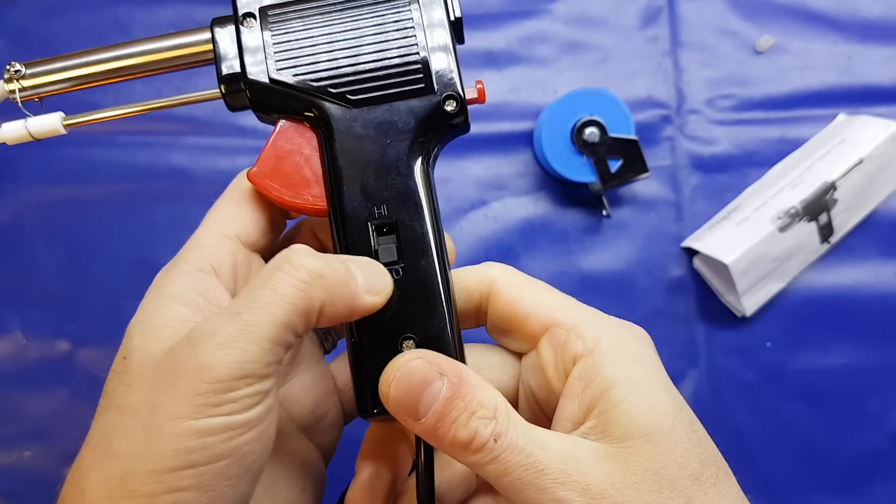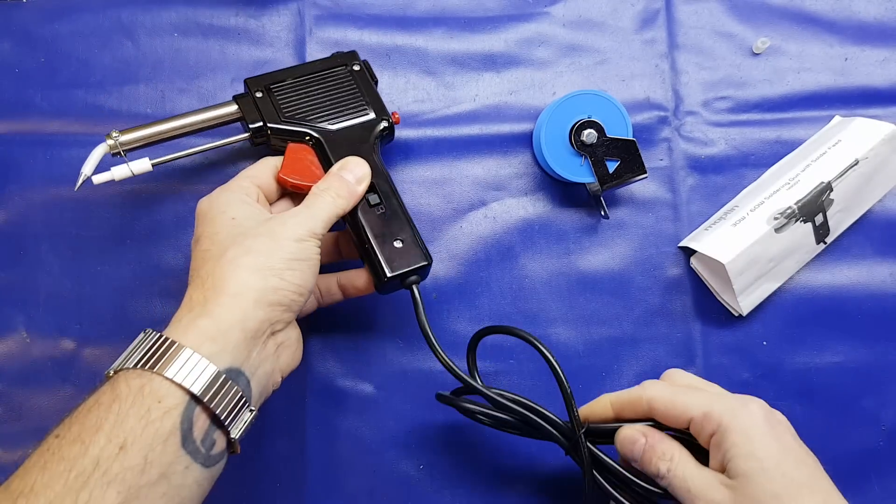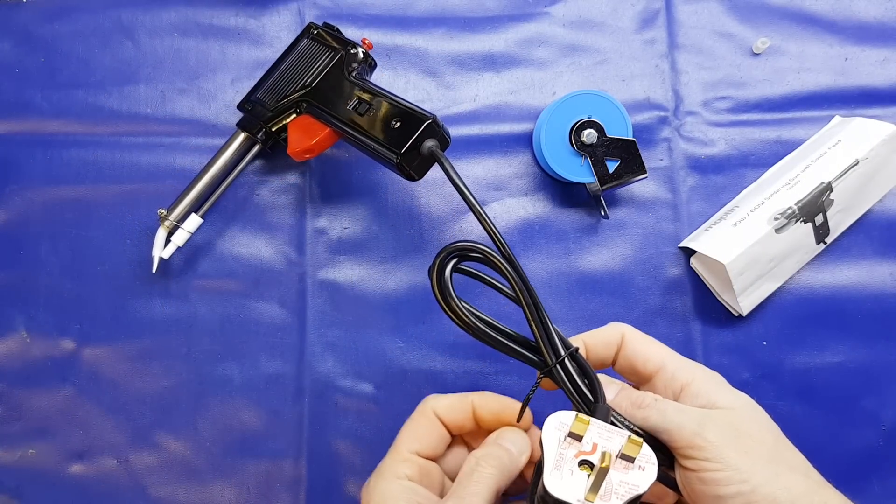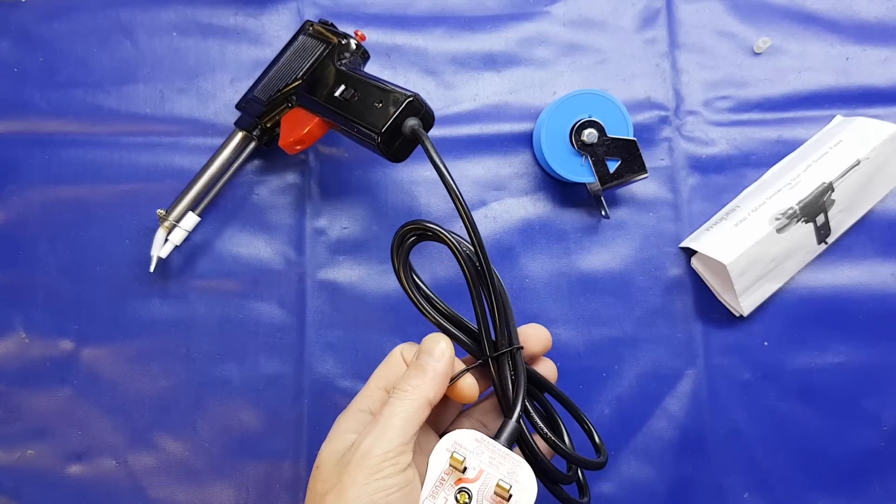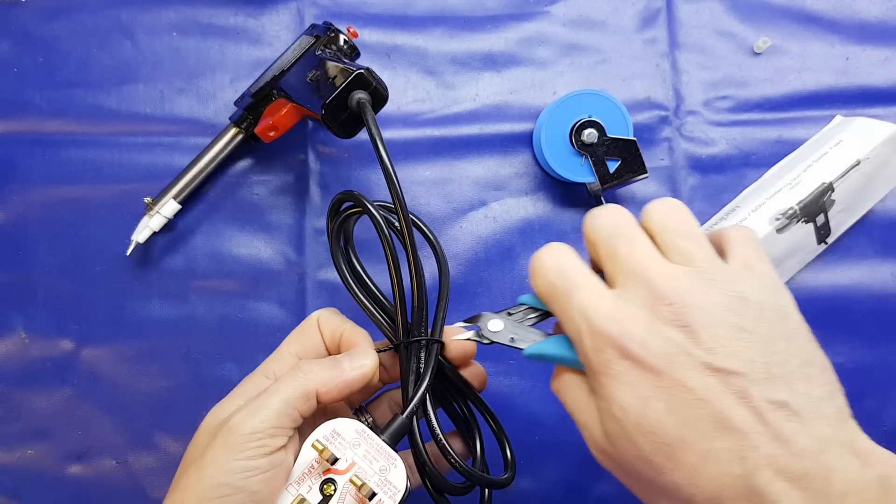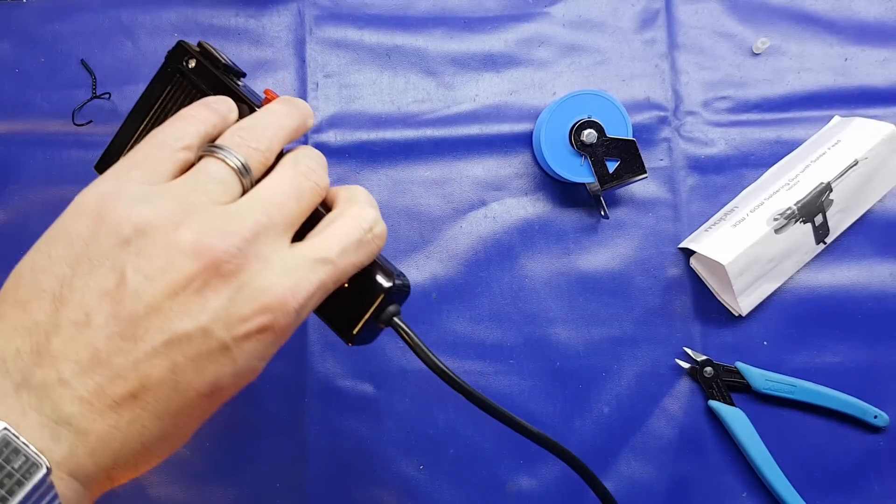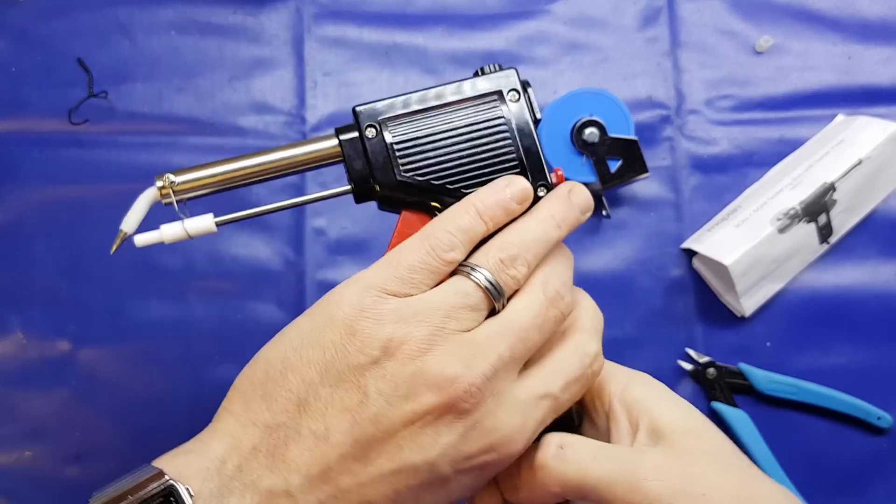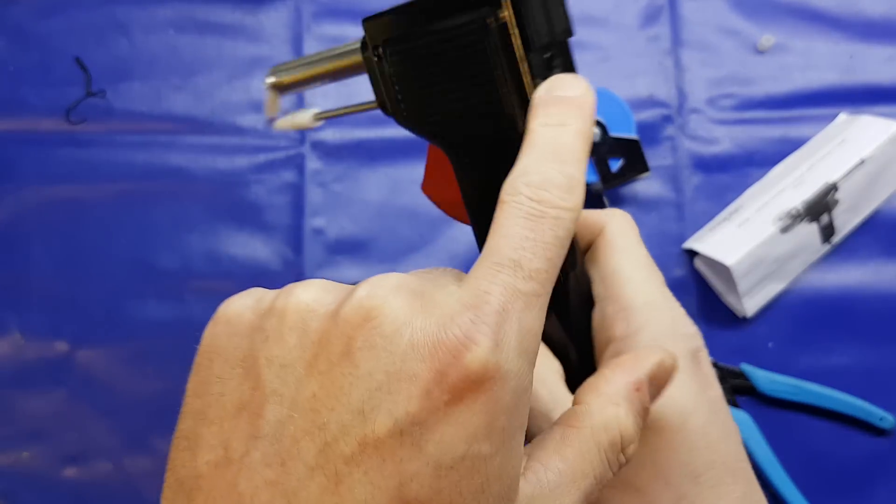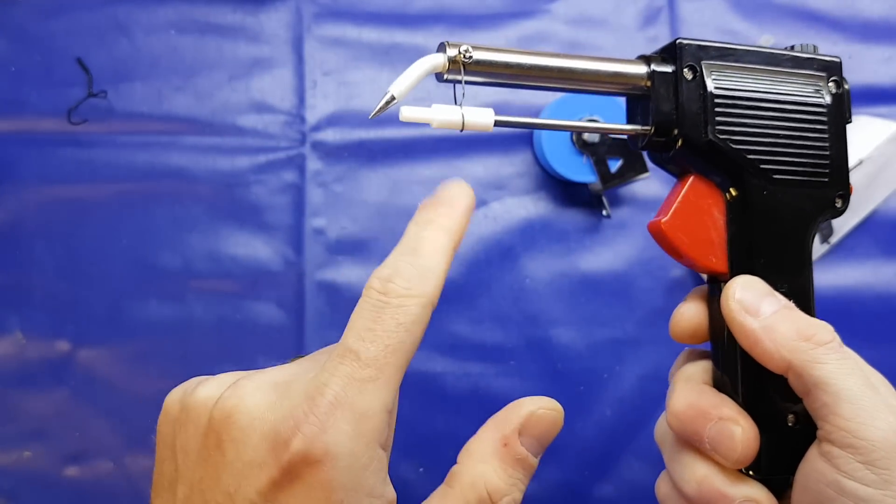So we've got our high-low switch. We'll pop it on low. And in fact, I think we'll probably just plug it in. If it says it's going to take 10 minutes to warm up, we might as well plug it in before we go any further. Okay, so we'll pop that in. Start warming up. Clearly our solder goes in here. And is dispensed out this nozzle here. Onto the tip.